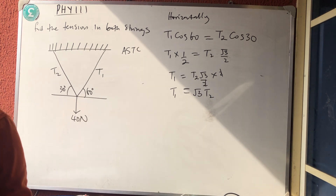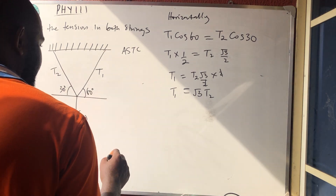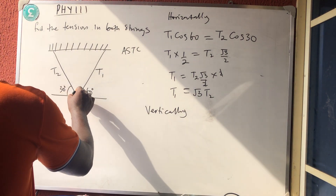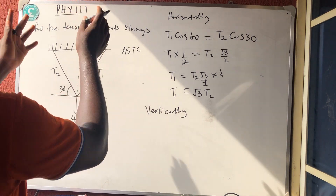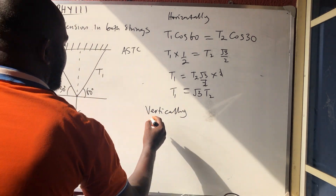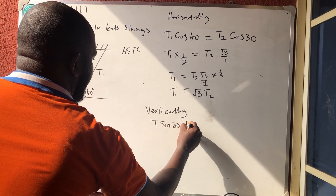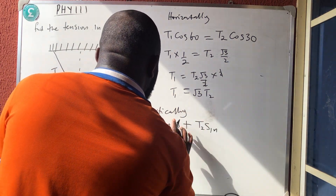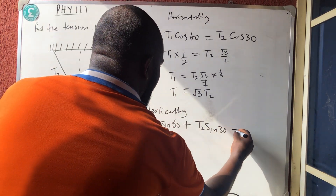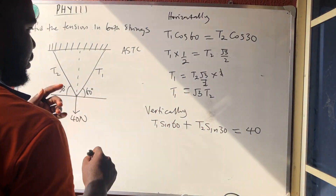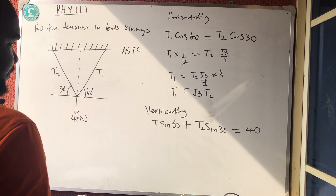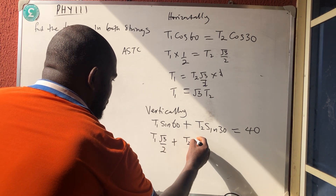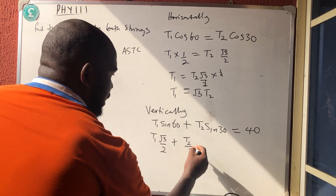Now resolving vertically: all upward components must equal all downward forces. So T1 sin 60° + T2 sin 30° = 40 Newtons. Substituting values: T1 × (√3/2) + T2 × (1/2) = 40.